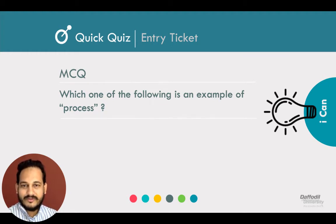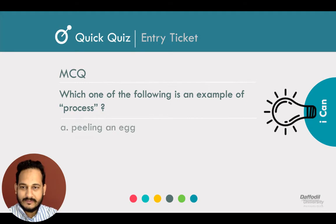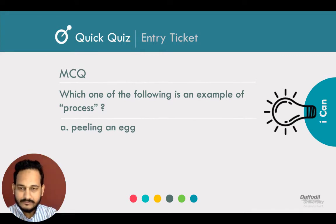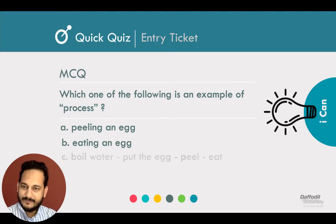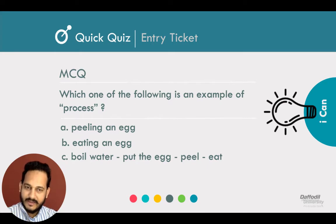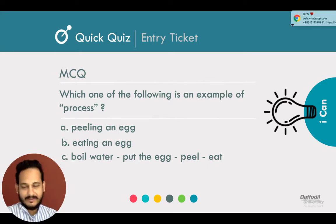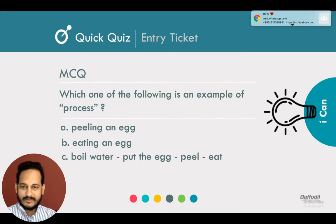Which one of the following is an example of a process? Option A: peeling an egg — that is a single activity. Option B: eat an egg — that also indicates a single activity. Option C: boil water, put the egg, peel it, and eat it — that indicates a process. Why is this a process?